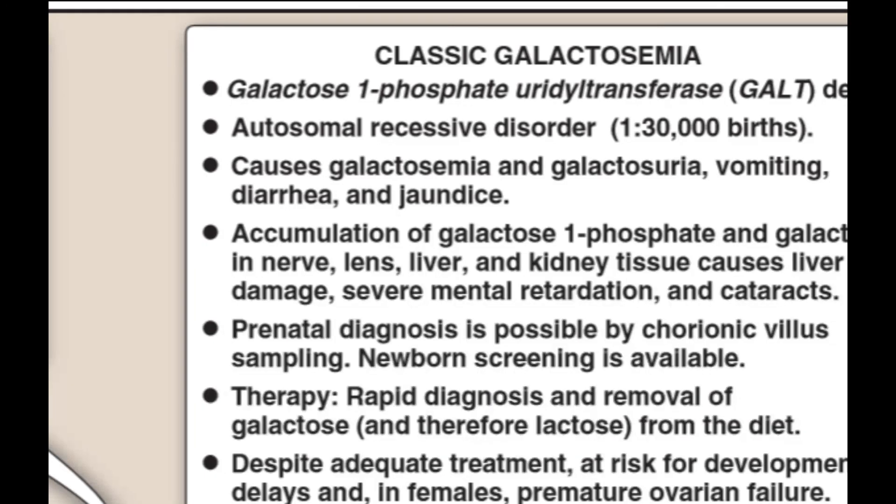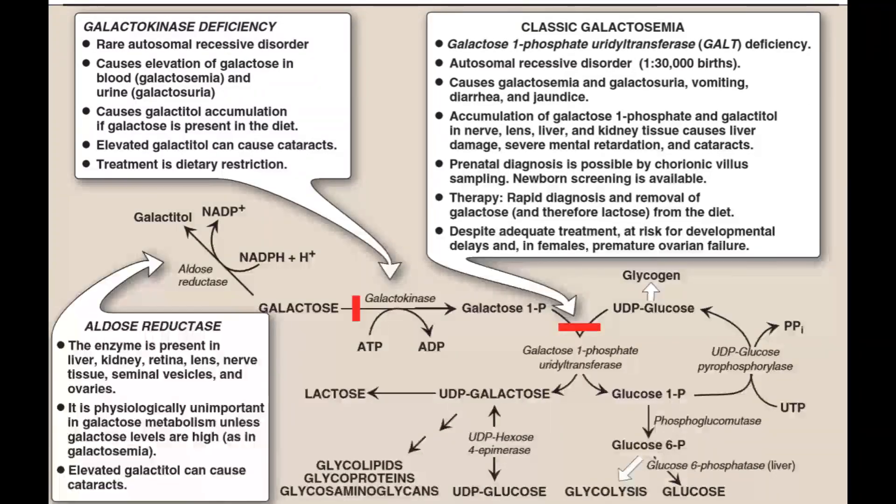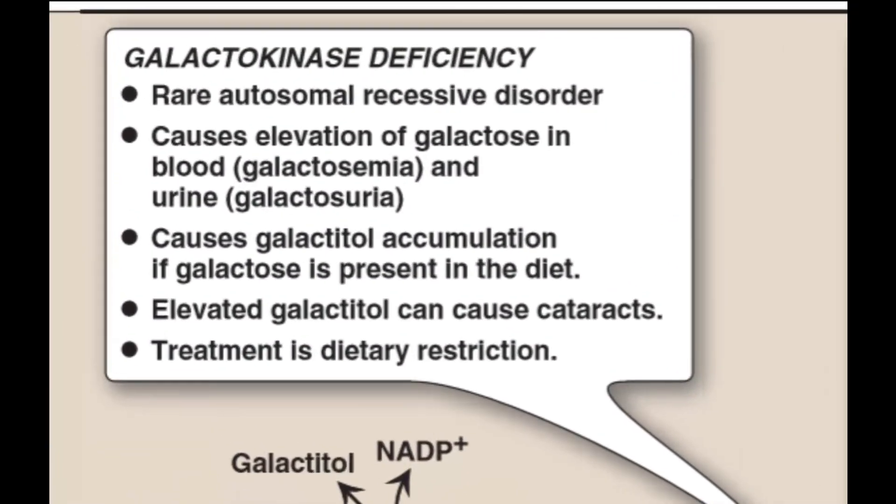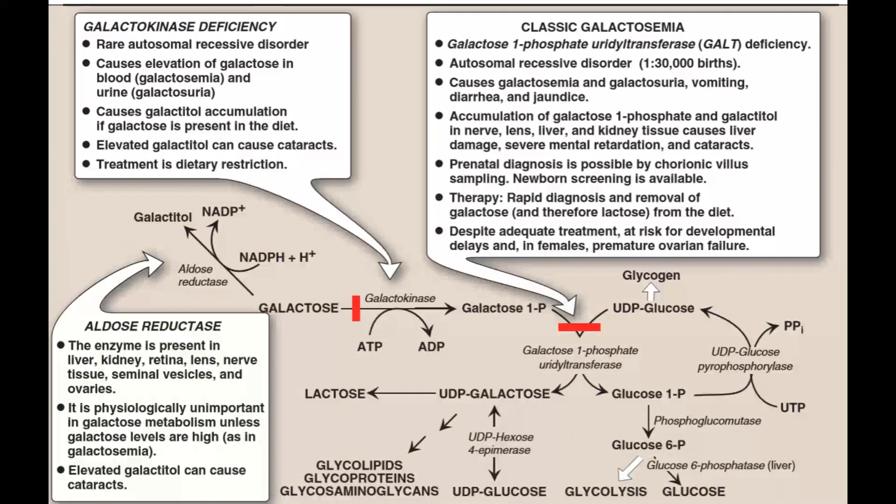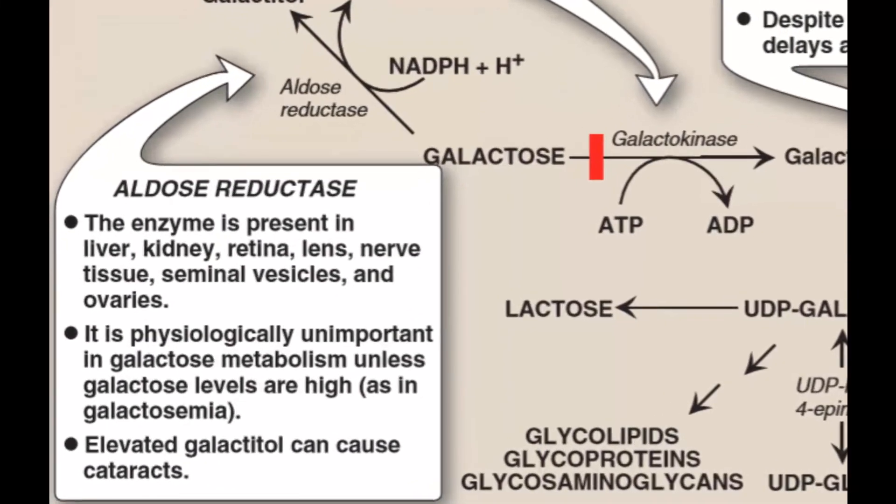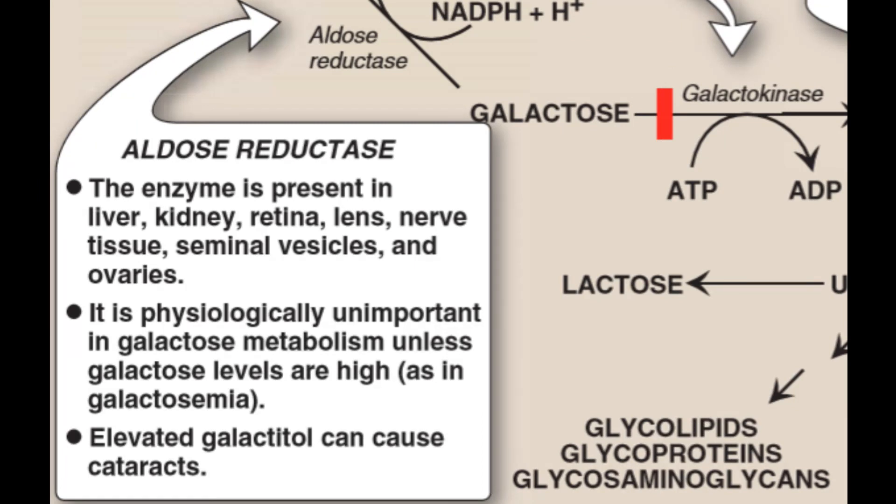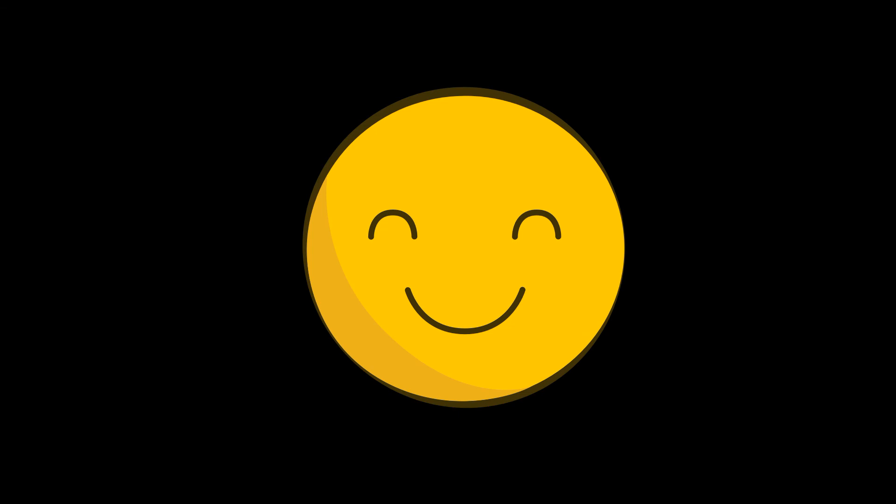Moving on to galactokinase deficiency, it is rare and also causes galactosemia and galactosuria. Elevated levels can cause cataracts. Aldose reductase is physiologically unimportant unless it causes galactosemia, leading to cataracts.